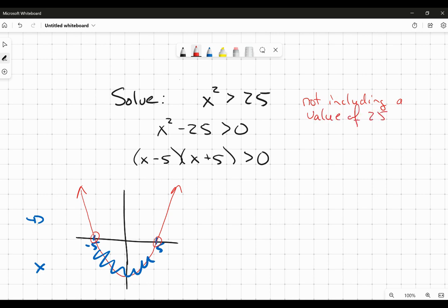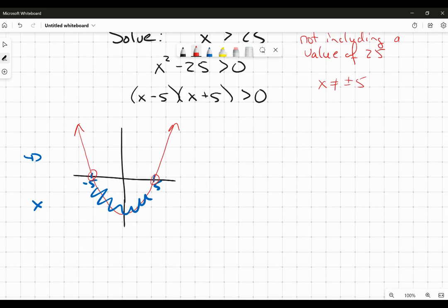Which means x really can't equal plus or minus 5. So I'm not going to include those. But values greater than 5 or values less than negative 5 will in fact work. So what I'm looking for here are values where x is less than negative 5 together with values that are greater than 5.